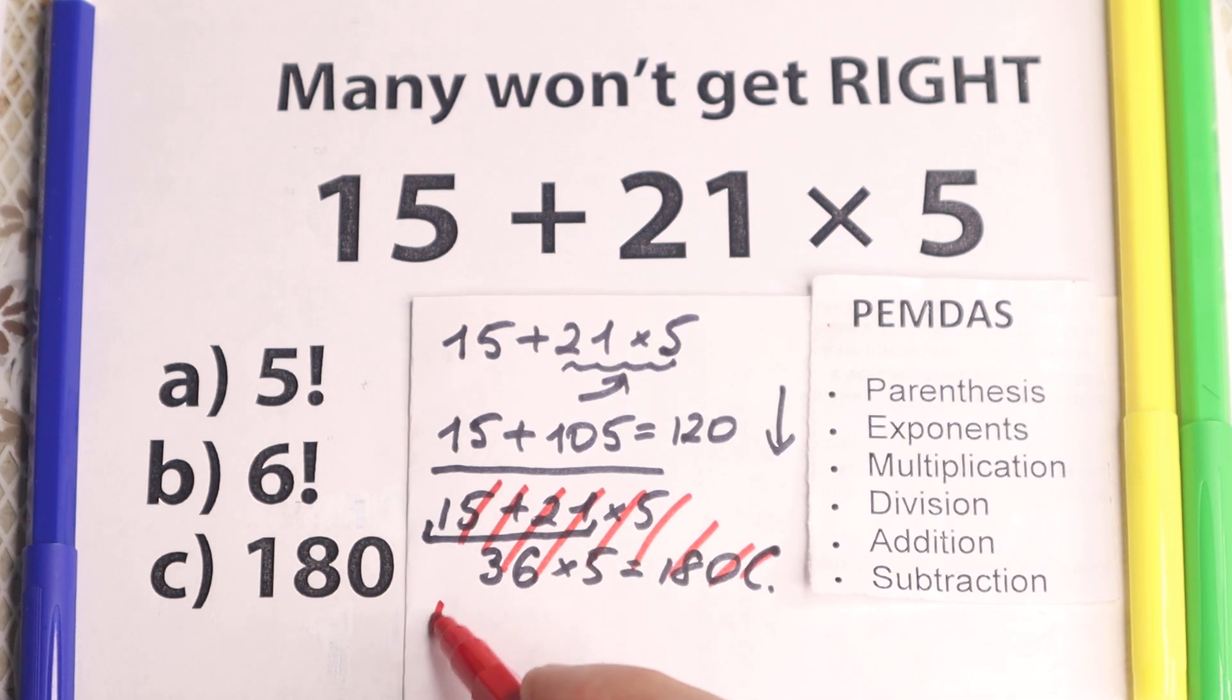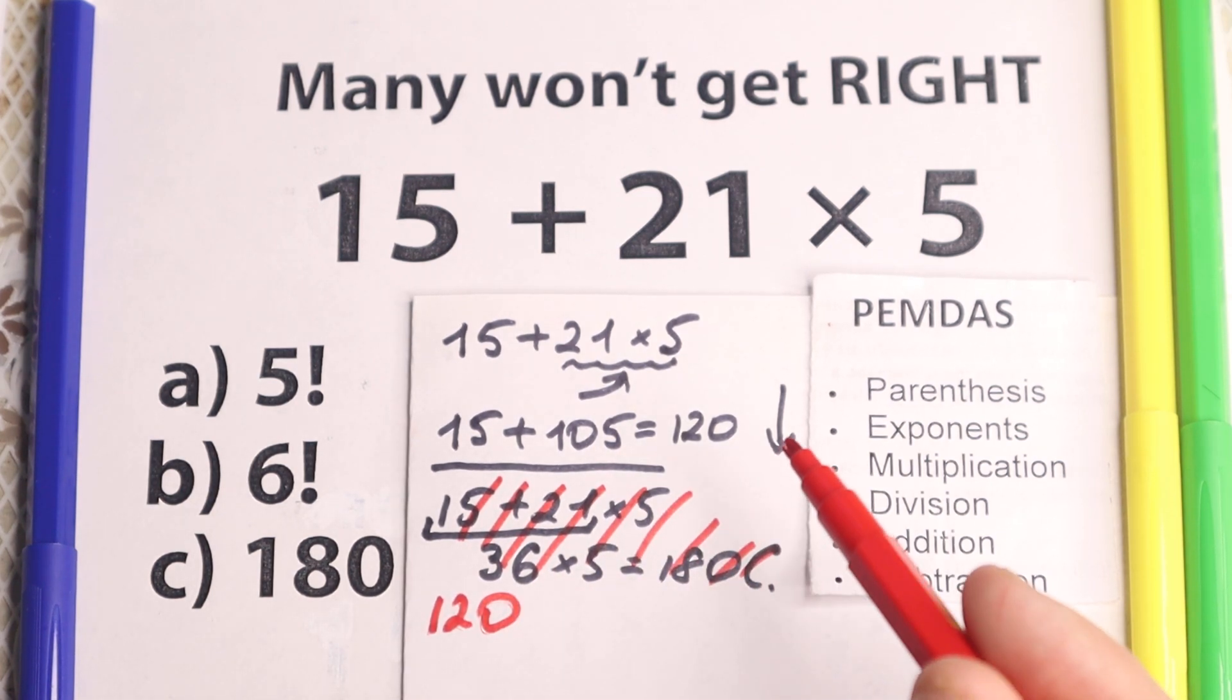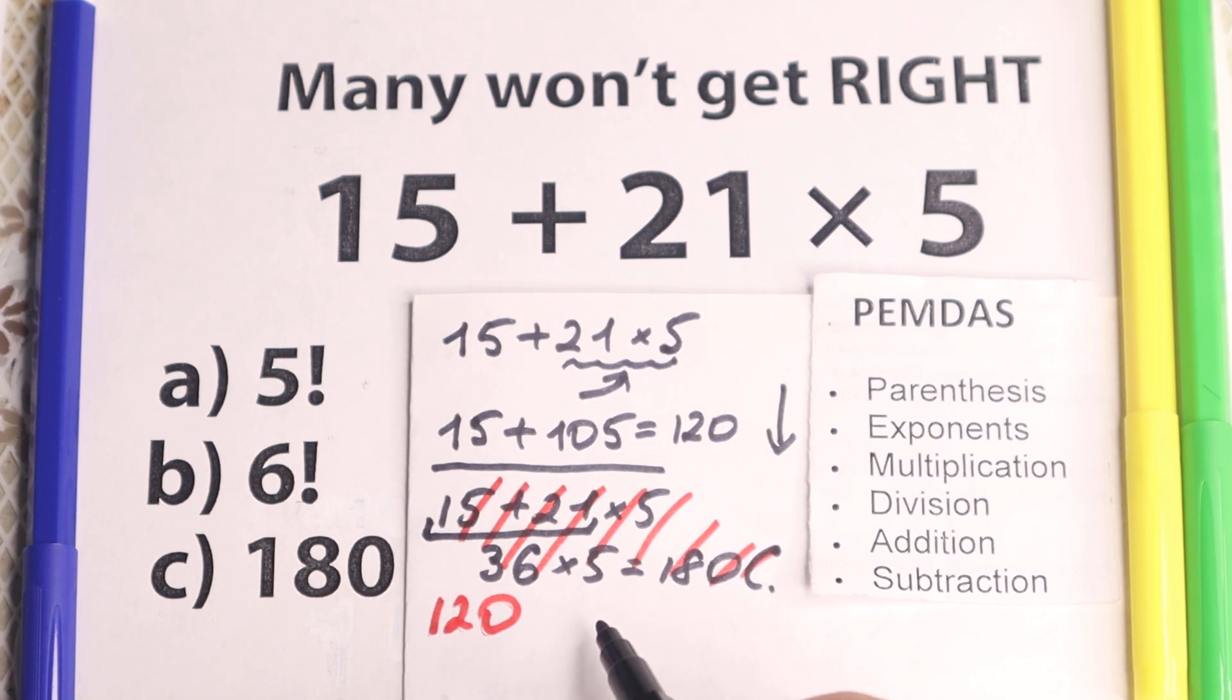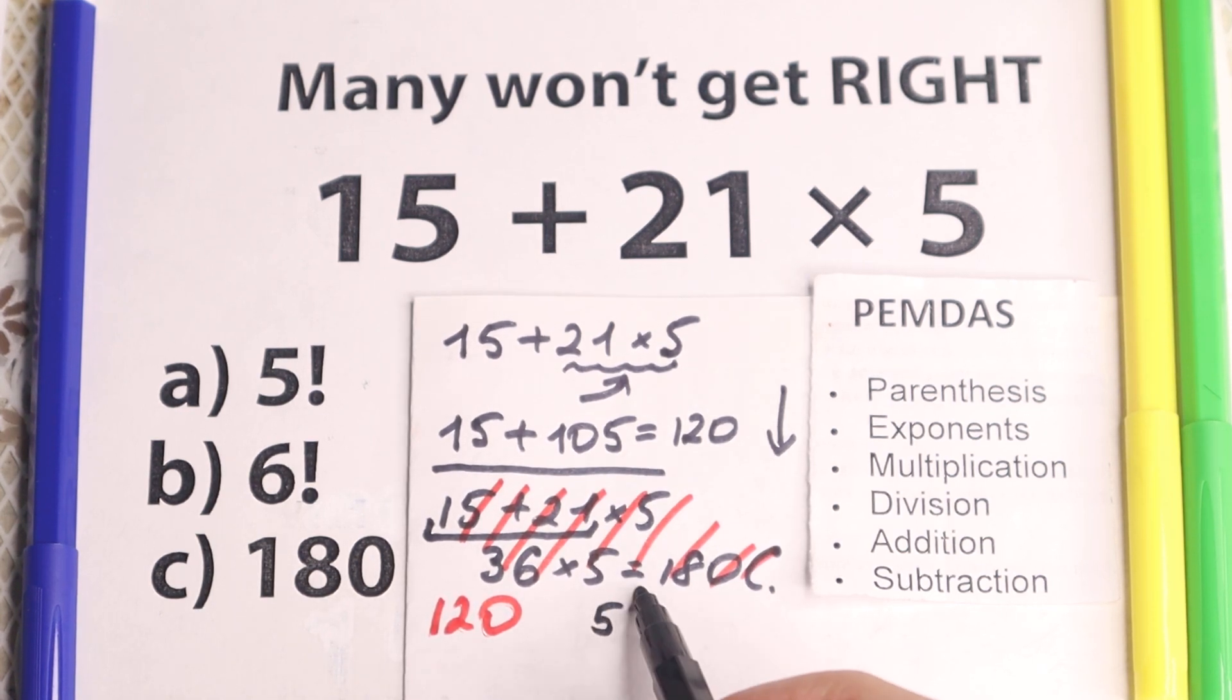Because 120, let's look at this number, and let's look at the option that we have right now. We have 5 factorial and 6 factorial, let's solve it. 5 factorial, what about 5 factorial?